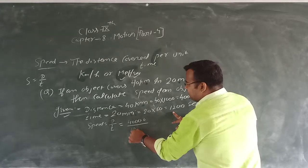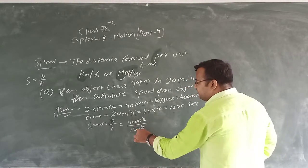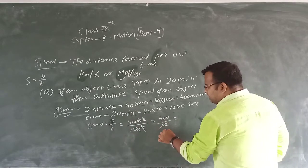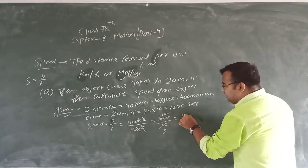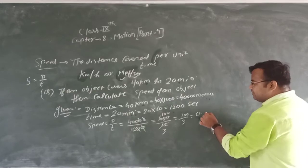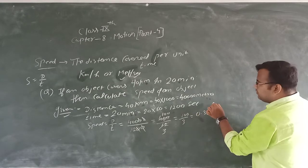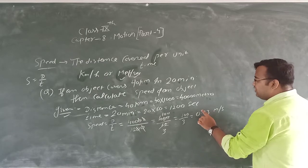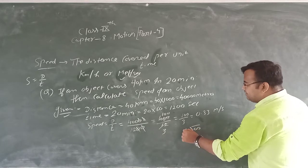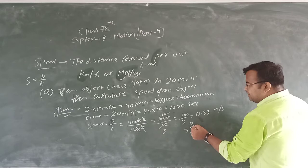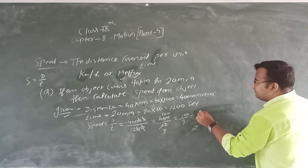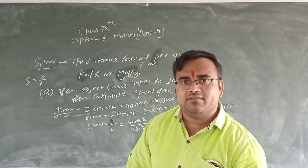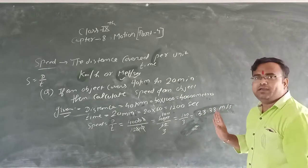So we have 40,000 meters upon 1200 seconds. The zeros cancel out, giving 400 upon 12. Simplifying: 4 threes are 12 and 400 becomes 100 upon 3, which equals 33.33 meter per second. So the answer is 33.33 meter per second.